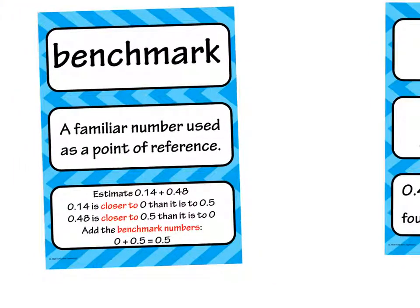The term benchmark is used to describe a familiar number used as a point of reference. In their example here, they are using the benchmarks of 0 and 5 tenths. They were deciding that 14 hundredths is closer to 0 than it is to 5 tenths, and that 48 hundredths is closer to 5 tenths than it is to 0.